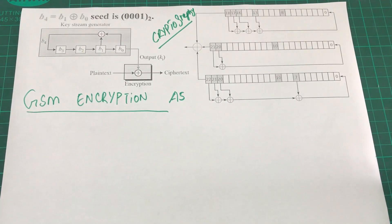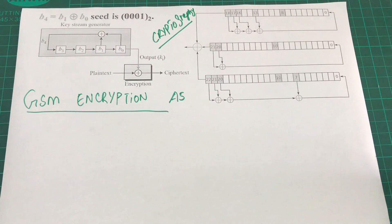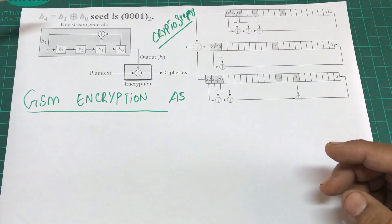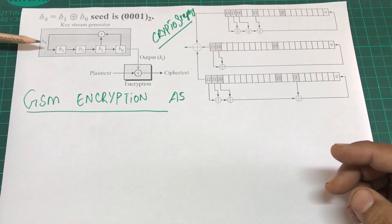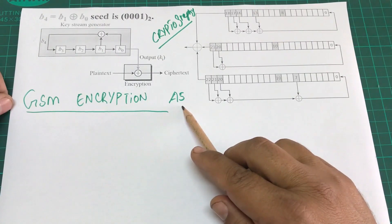We're done with traditional ciphers except for one more — a very effective and powerful cipher that's quite old. We're going to look at another type of encryption technique based on something called Linear Feedback Shift Registers. We're covering this because the same pattern is used in the GSM encryption technique known as A5.